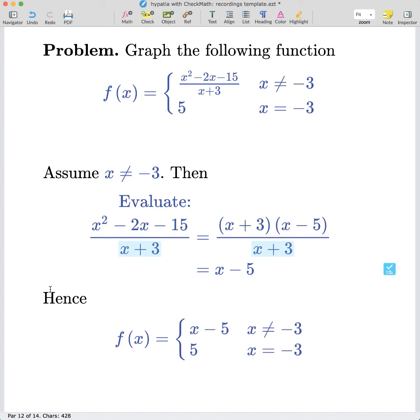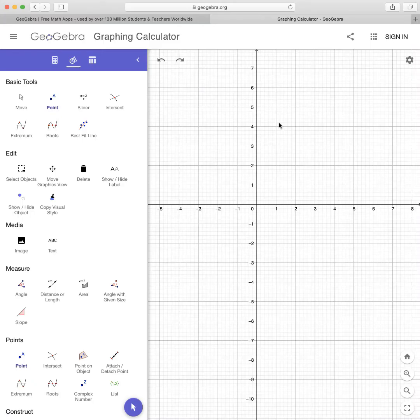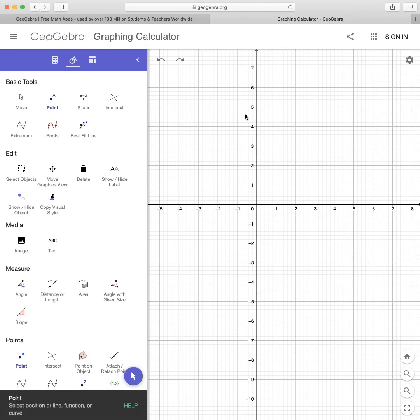Now we can move on to trying to plot this using GeoGebra. Okay, so we're in GeoGebra. Now let's start by plotting the case where f of x equals x minus 5 for x not equal to negative 3.